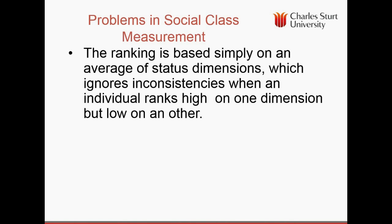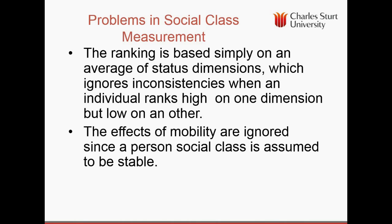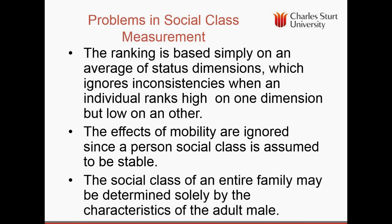Of course, there are problems in measuring social class. Basically it's an average of status dimensions, so we can have someone like a plumber who scores high on income but low on education. The effects of mobility are also ignored, since it's assumed that your social class status is stable, but people's income and occupations do change. Generally it's an average for an entire family — so what is the social class of a nurse married to a politician, or someone married to a professor or the Duchess of Cambridge? Social class is usually determined by the chief income earner, often the adult male, but there are problems with that approach.